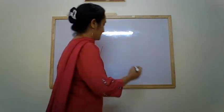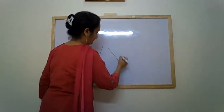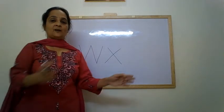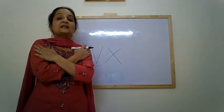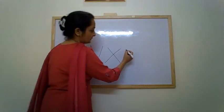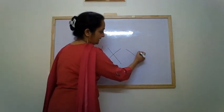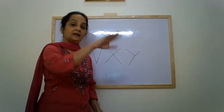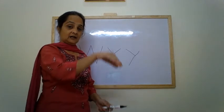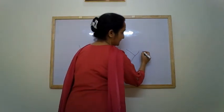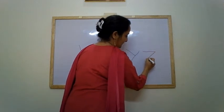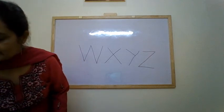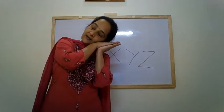Next is X: two slanting lines — X makes the sound X. Small slanting line and a long slanting line is letter Y. And the last letter: sleeping line, slanting line, sleeping line — letter Z.